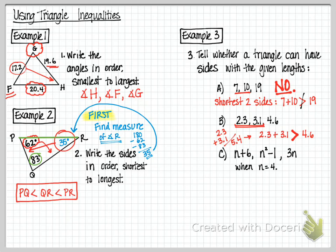In part B, 2.3 and 3.1 are the shortest sides, and you add that together and you get 5.4, and 5.4 is greater than 4.6, so yes, you can make a triangle.